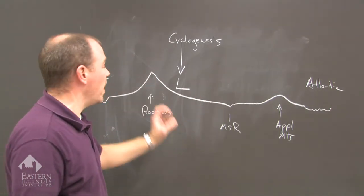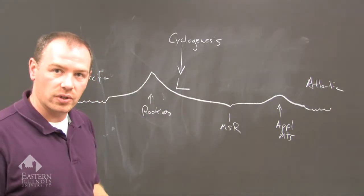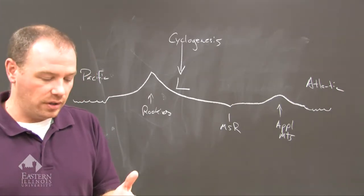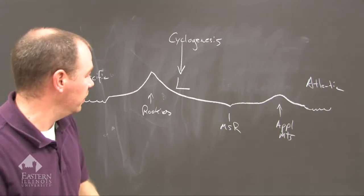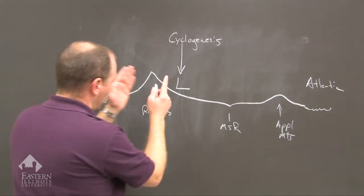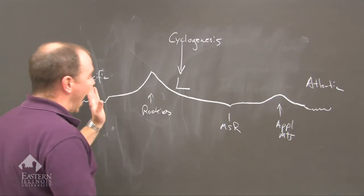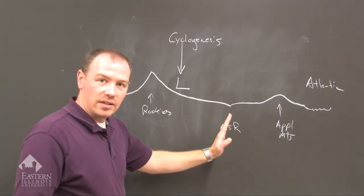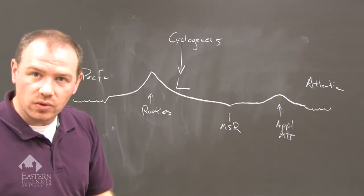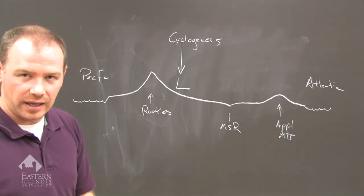Then east of the Rockies, cyclogenesis occurs at particular points. The averages are Alberta, Canada, Colorado, and then the Four Corners region. So we have cyclogenesis that begins here. As it progresses to the east across the Great Plains and into the midwest, it continues to develop and intensify.